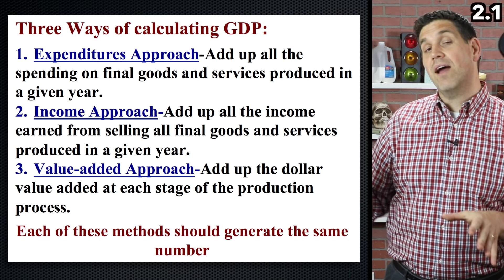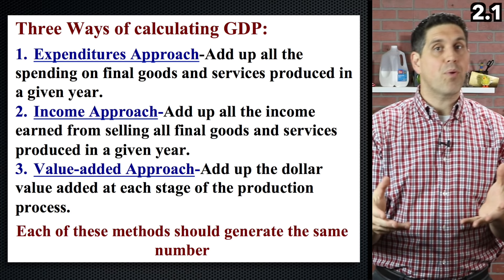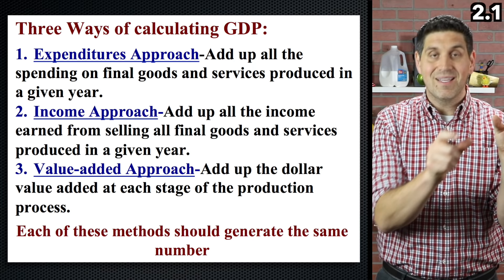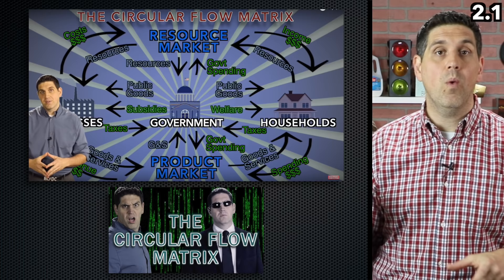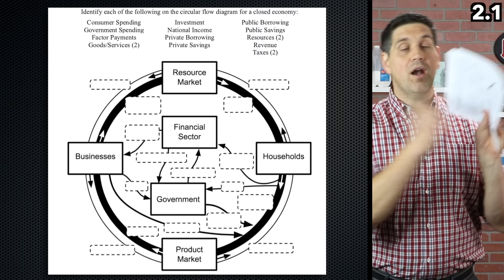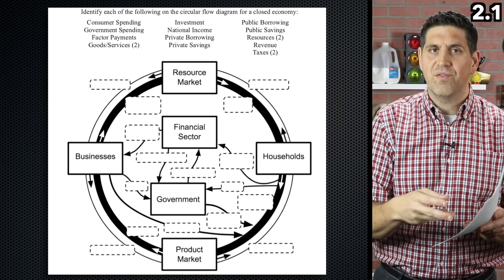The last way to measure GDP is the value added approach. This adds up all the different value added at each stage of production. In the production process, we go from raw materials to finished product, and along the way there's value added by different companies that can be added up. The last thing you need to learn in topic 2.1 is the circular flow model. I made a video explaining all of it on YouTube, so go to the last page in this unit of the study guide and fill out that chart.